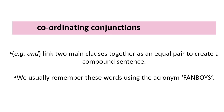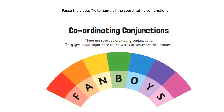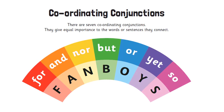Coordinating conjunctions link two main clauses together as an equal pair to create a compound sentence. We remember these words using the acronym FANBOYS — an acronym where each starting letter gives us the word it represents: F, A, N, B, O, Y, S. Pause the video and try to name them all. They are: for, and, nor, but, or, yet, and so.